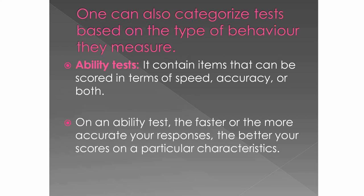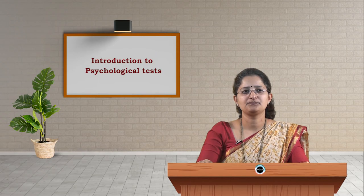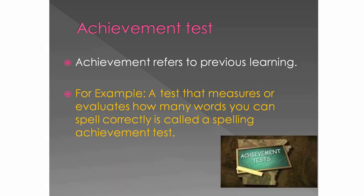Tests can also be categorized based on the types of behavior they measure. Ability tests contain items that can be scored in terms of speed, accuracy, or both — the faster or more accurate your responses, the better your score on a particular characteristic. Achievement tests refer to previous learning; for example, a test that measures how many words you can spell correctly is called a spelling achievement test.